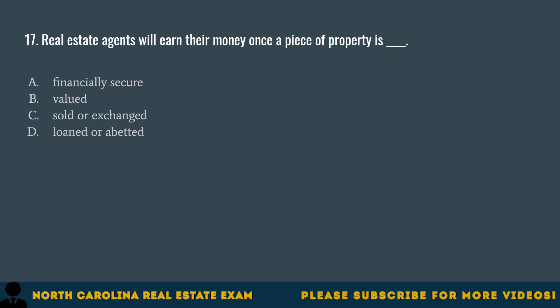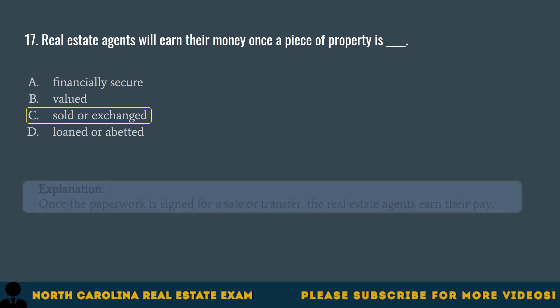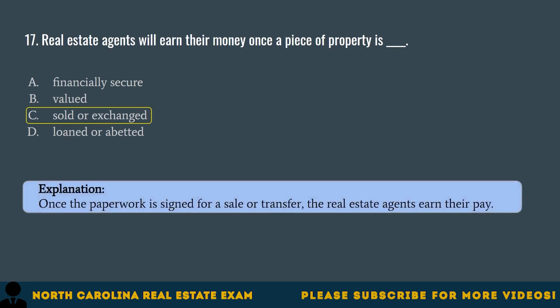Question 17. Real estate agents will earn their money once a piece of property is A. Financially secure. B. Valued. C. Sold or exchanged. D. Loaned or abetted. The correct answer is C. Sold or exchanged. Once the paperwork is signed for a sale or transfer, the real estate agents earn their pay.